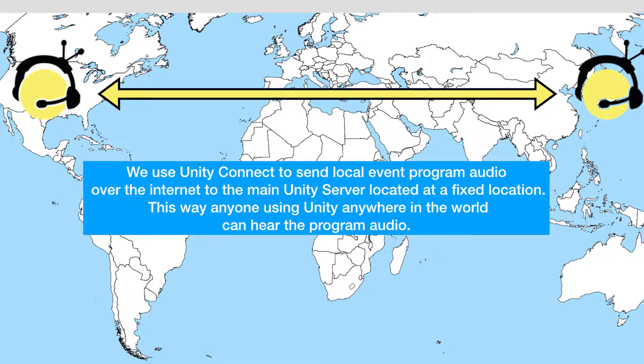That alone does not get you the program audio. The audio for this surfing event is happening there in Japan — that's where the event is taking place. So locally in Japan, what we have is a Mac computer connected via an I/O box of some kind, receiving program audio. It is not a Unity Intercom server — it's Unity Connect. Unity Connect is software running on a Mac computer. There is audio getting brought in via XLR, maybe off a soundboard, into an I/O device, and it is getting brought into Unity Connect.